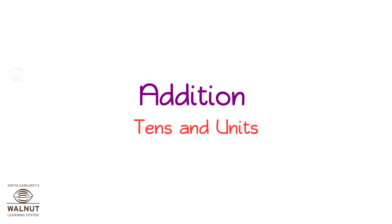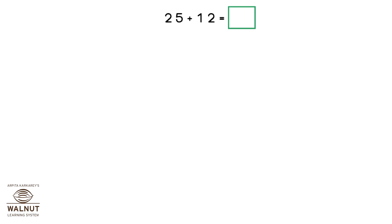Addition Tens and Units. Counting forward is not always quick. When we add big numbers, we can add the tens and units separately. Look at this problem: 25 plus 12. Counting forward by 12 numbers is slow. Let's find a faster way to do it now.